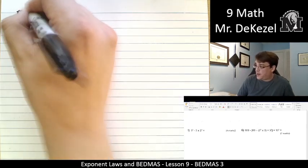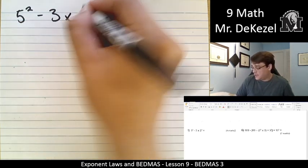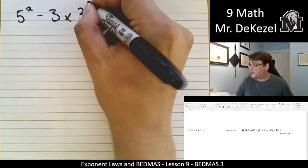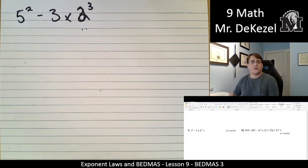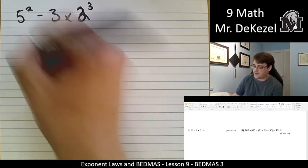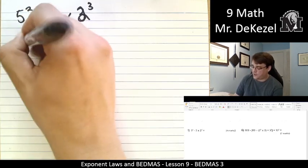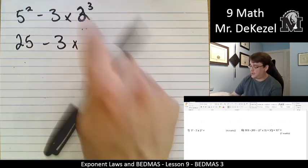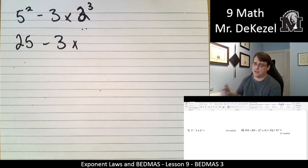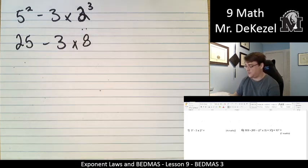We have 5 squared minus 3 times 2 to the power of 3. We're going to do our exponents first because there's no brackets. 5 squared we know is 25 minus, the 3 stays, multiplied by 2 to the power of 3. That's 2 times 2 times 2, which we know to be 8.